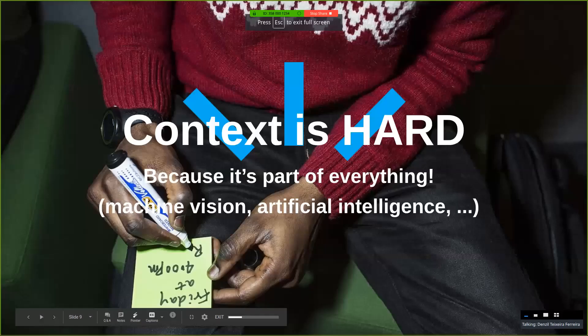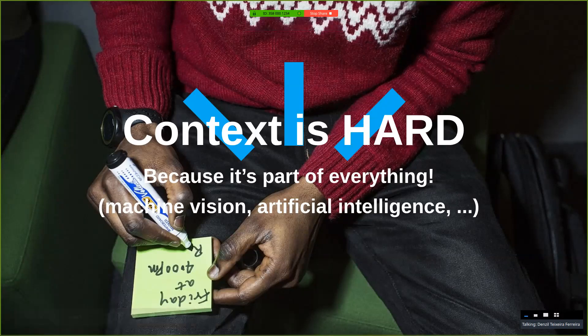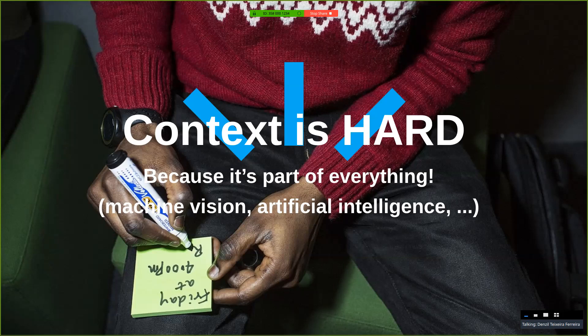Context is hard. It's really hard. It's actually part of pretty much all the fields in computer science. If you think about machine vision, it tries to understand what the machine is seeing and tries to see the relationship between logic. Artificial intelligence, the same thing. Making sense of the data is hard.